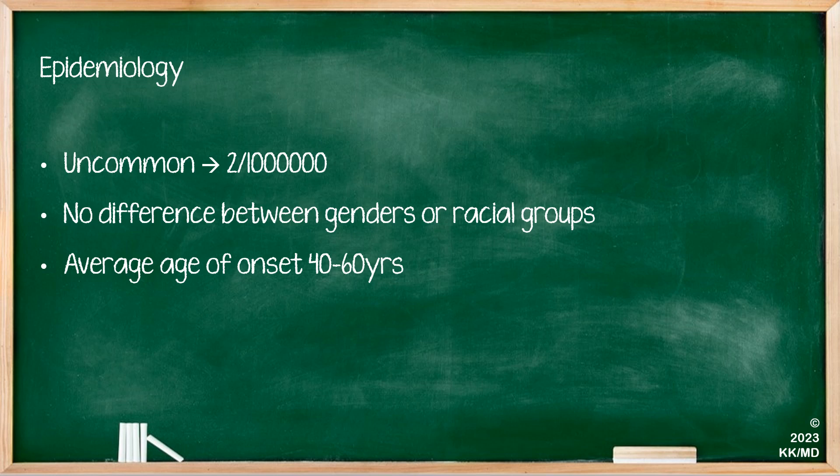As for epidemiology, it's a really rare condition and the average incidence in the US is about two people per one million every year. There is no difference between genders or racial groups and the average age of onset is 40 to 60 years.